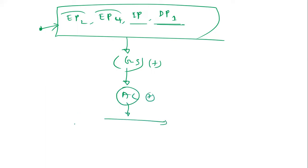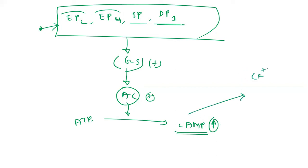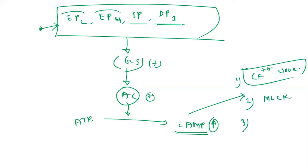Adenylyl cyclase converts cytoplasmic ATP into cyclic AMP (cAMP), raising the intracellular cAMP level. This increased intracellular cAMP will: first, close the calcium channels of the cell membrane; second, increased cAMP will inactivate myosin light chain kinase; and third, increased cAMP level will open the potassium channel.